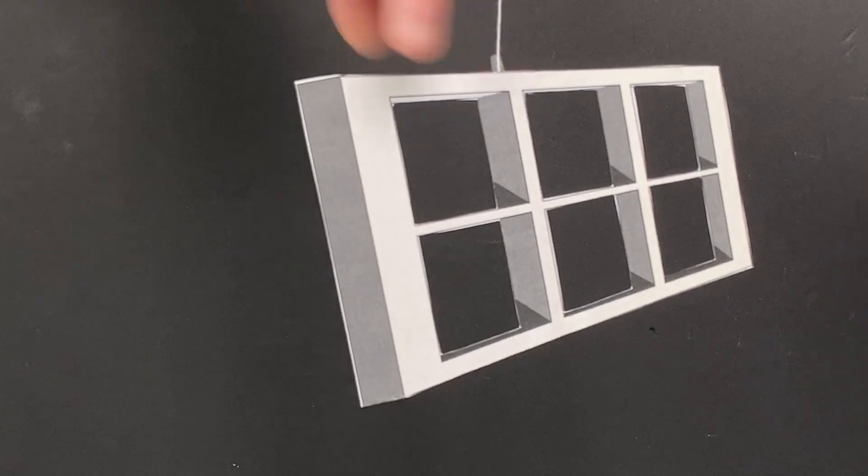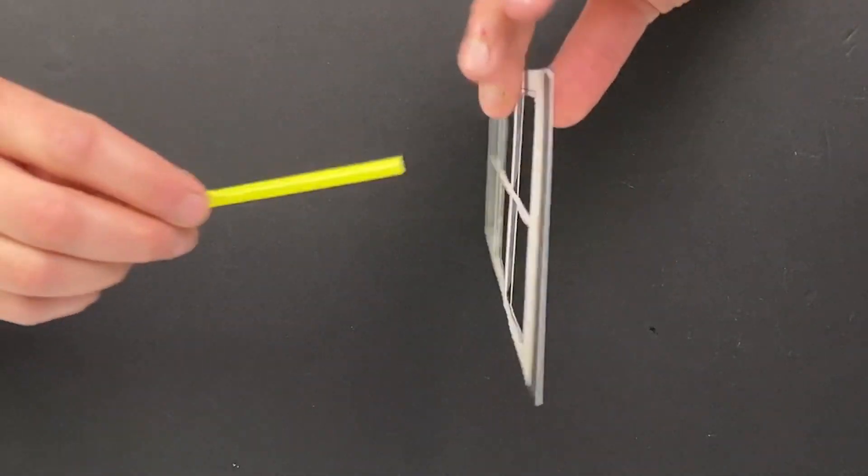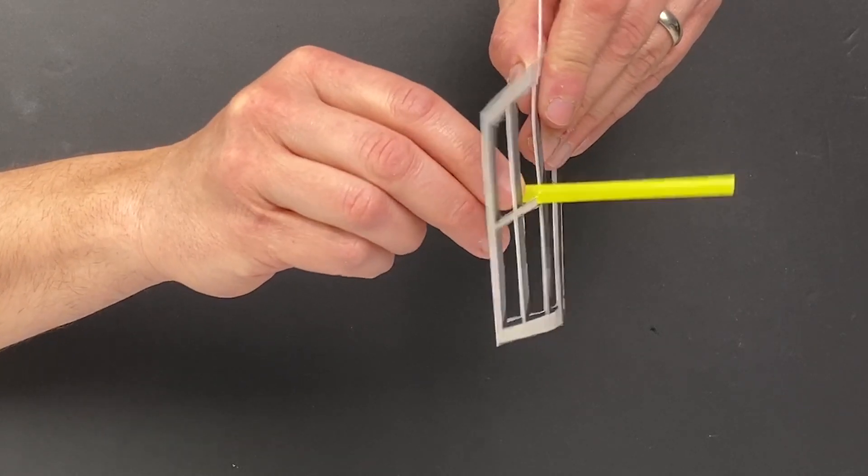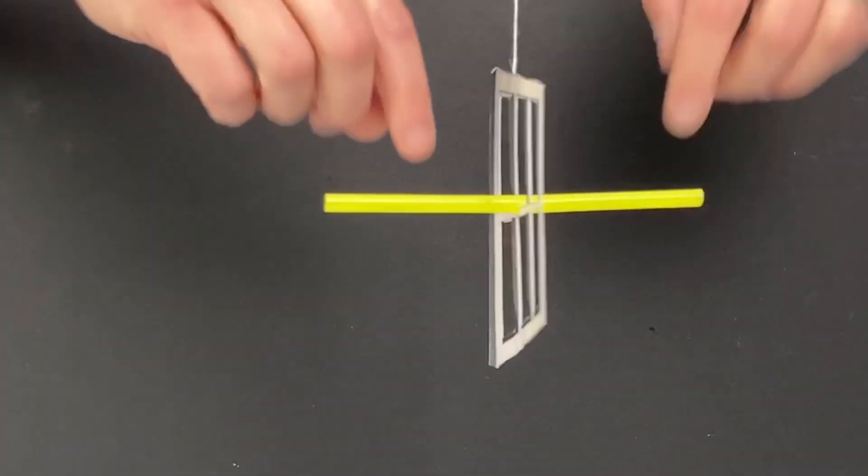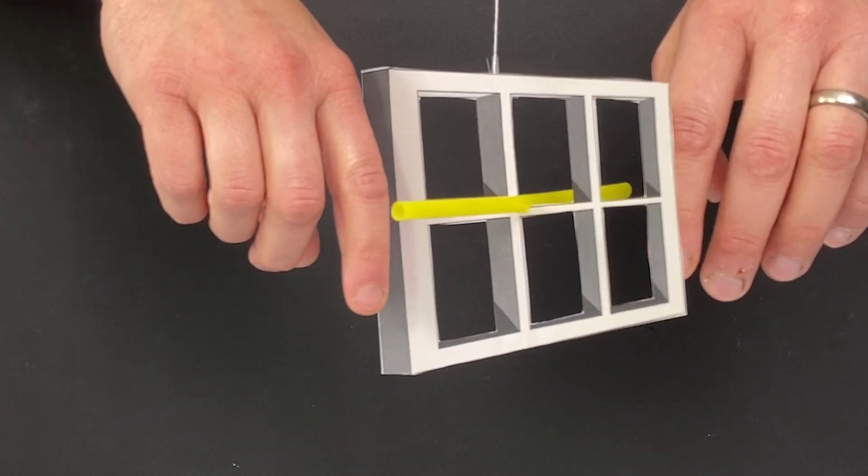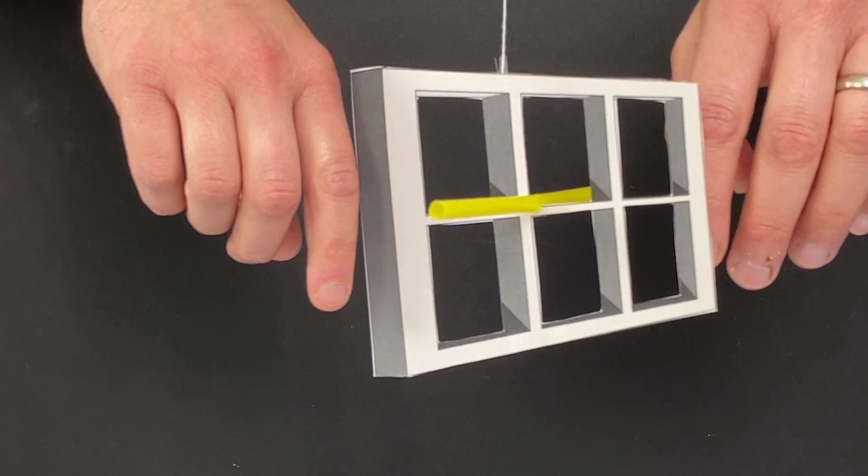So what I'm going to do now is so that we have a reference point, I'm going to put this straw, I'm going to attach this straw right here onto the window. Now, I want you to, we're going to do the same thing, I'm just going to let it spin and I want you just to watch what the straw is doing.